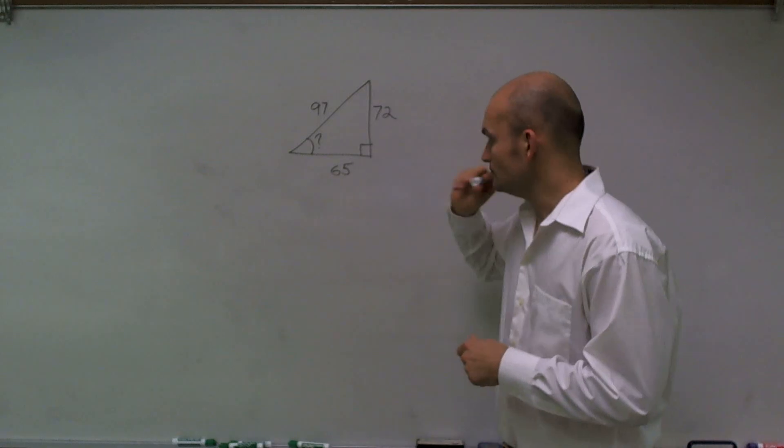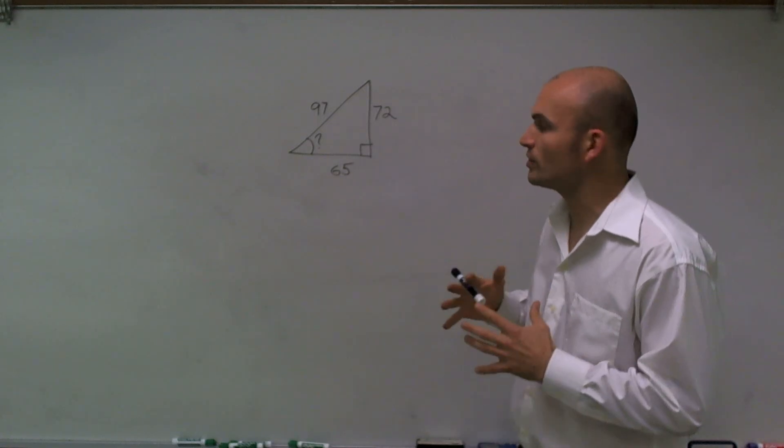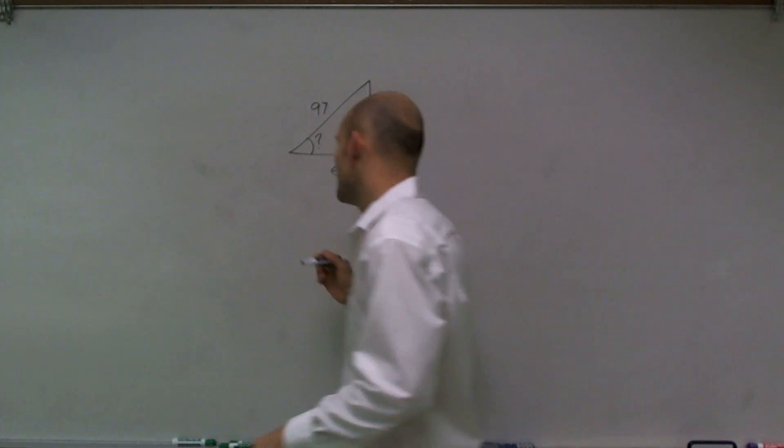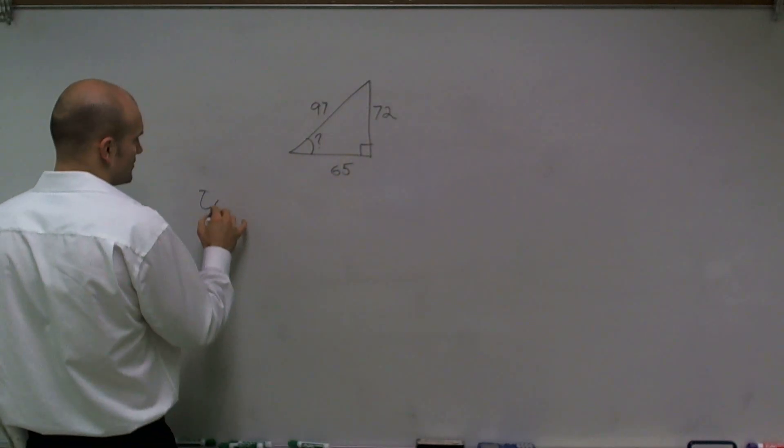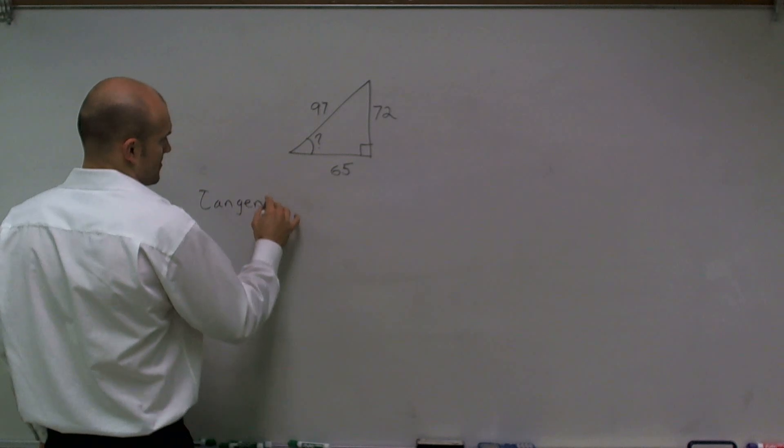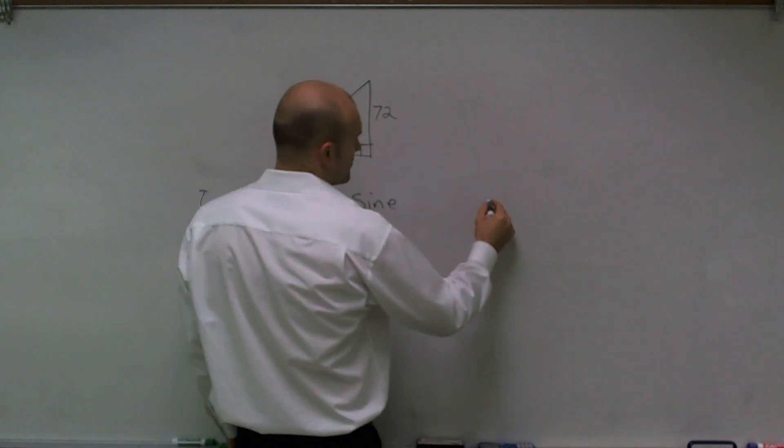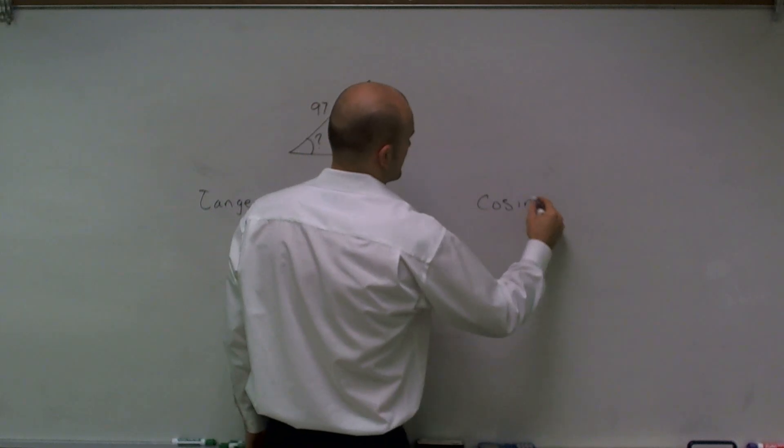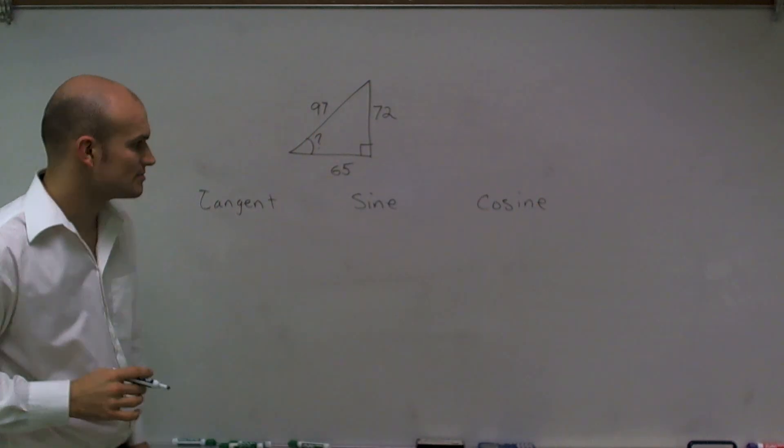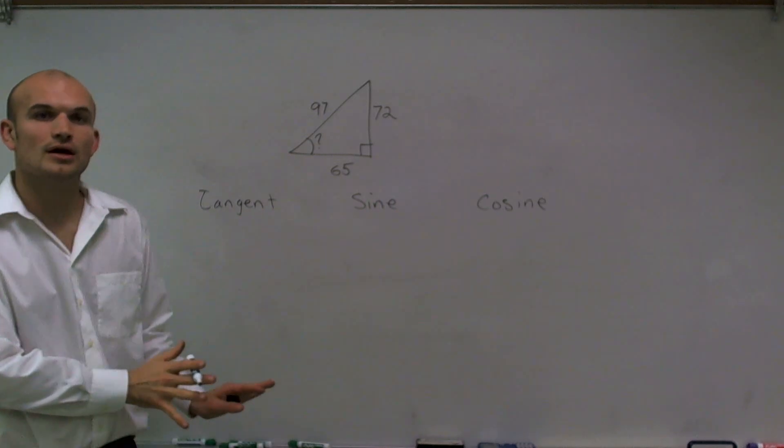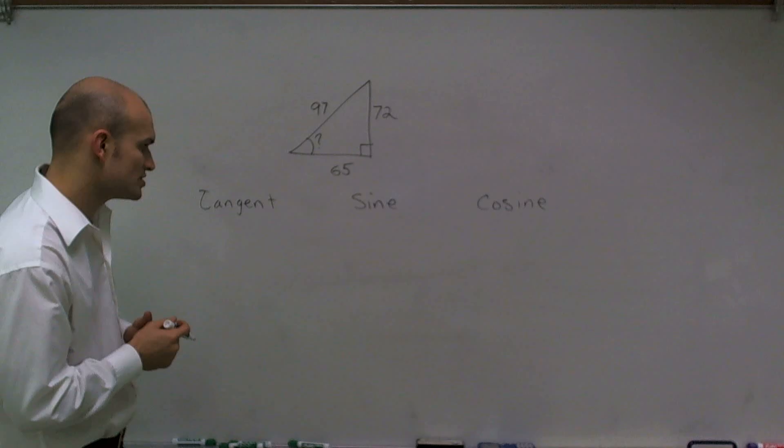When using your trigonometric properties, it's important for you to understand what exactly they mean. So let's write them out. The first one is the tangent, the next one is the sine, and then we'll talk about the cosine function. I'm going to write these out because through the rest of the video I'm going to abbreviate these three functions.